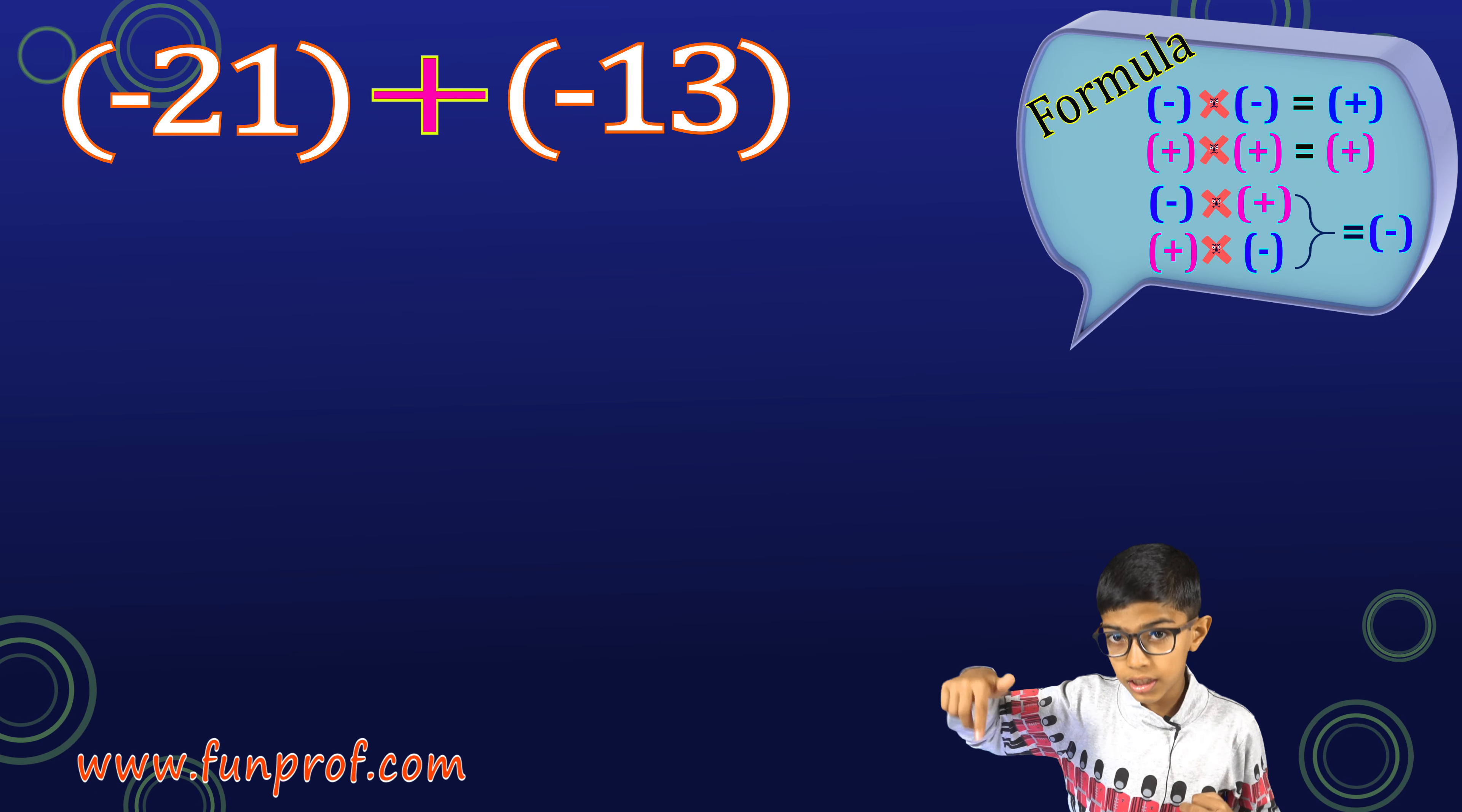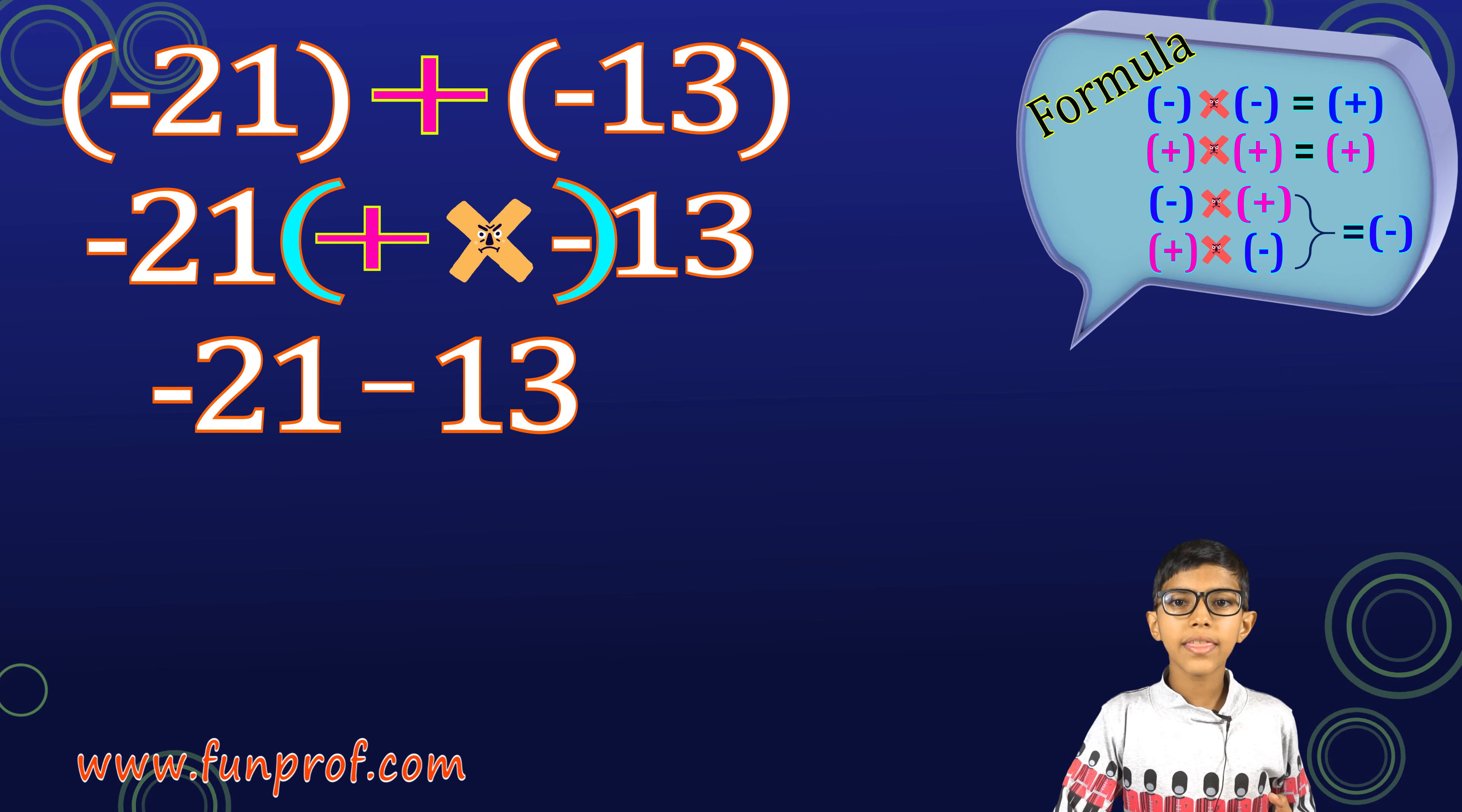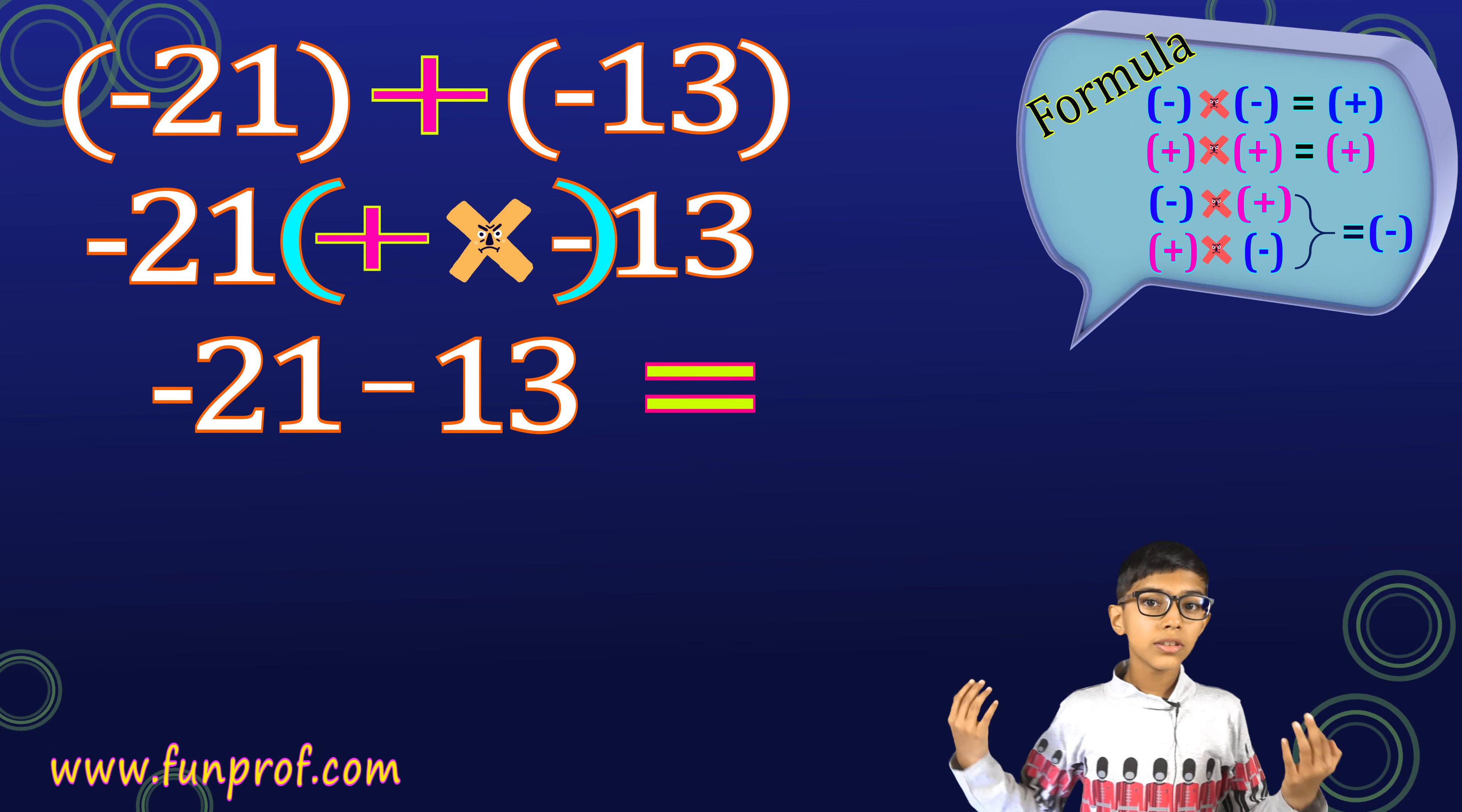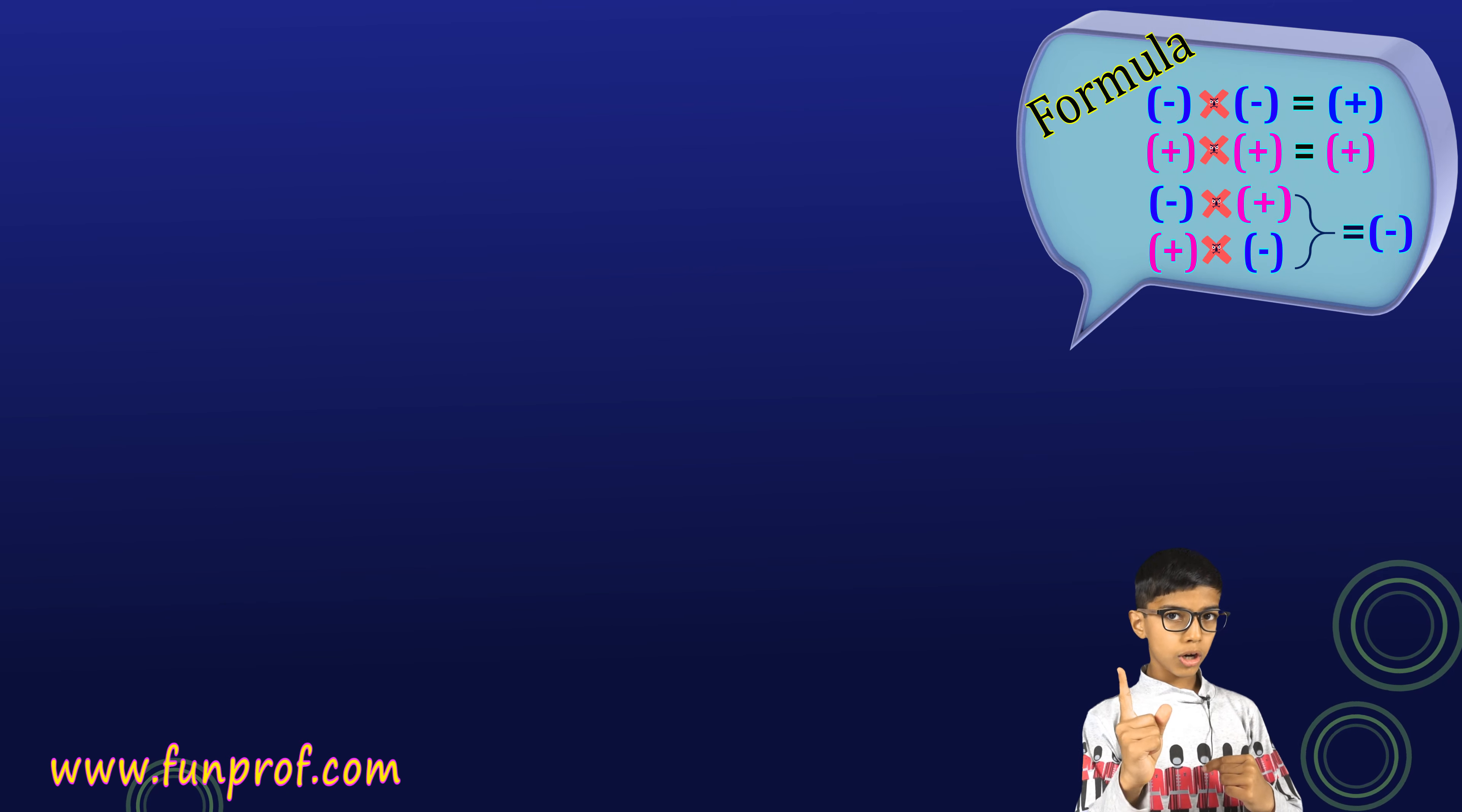Now, minus 21 plus minus 13. Minus 13 is in the bracket. Now, we open the bracket. Plus into minus, it's minus. So, minus 21 minus 13. We go to minus 21 and then we subtract 13, going to the left. So, 21 plus 13 and we get 34. Now, we put a negative sign in that number. So, we get the answer.